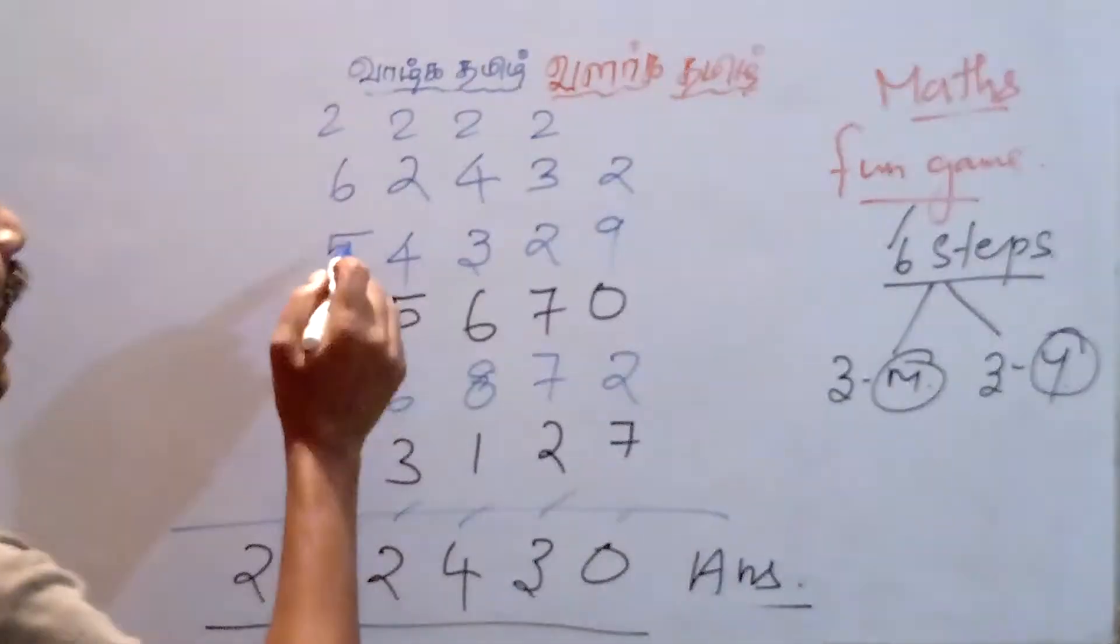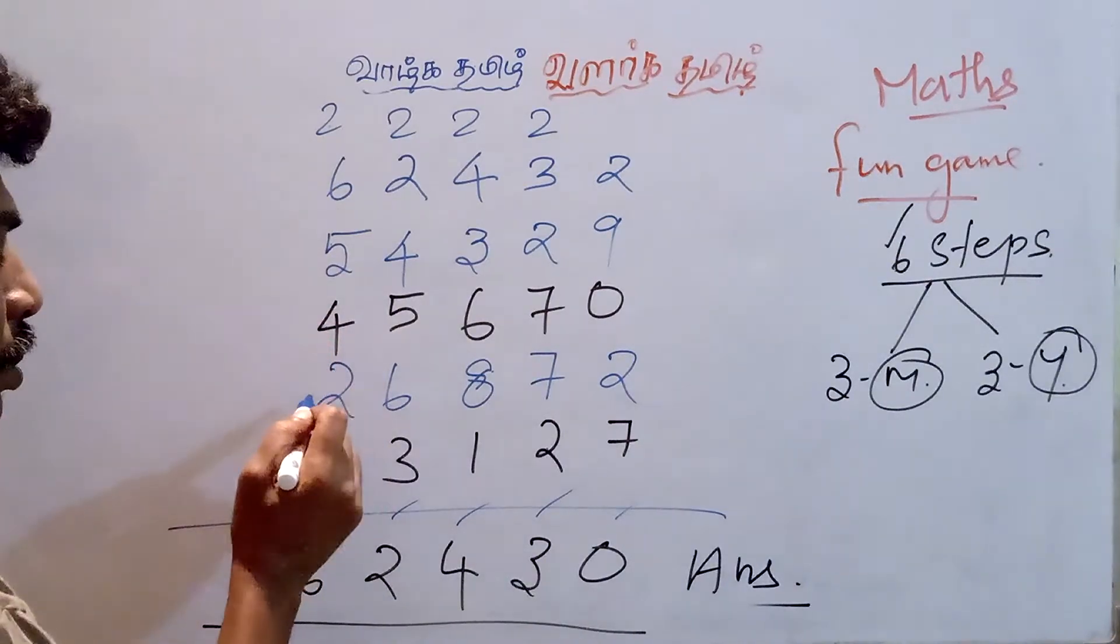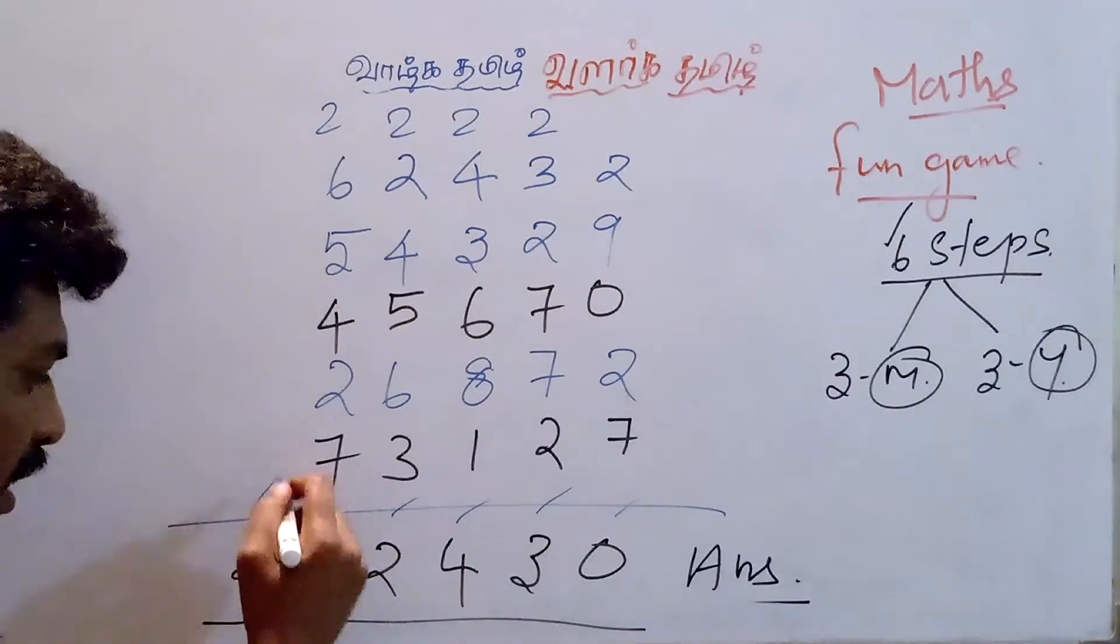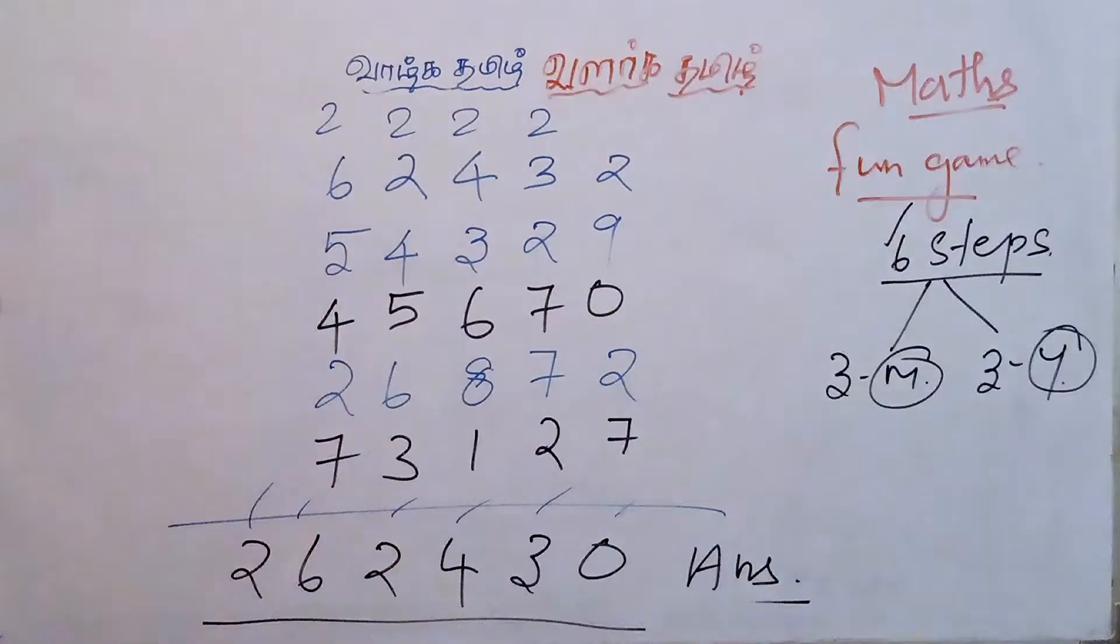2 plus 6 is 8, plus 5 is 13, plus 4 is 17, plus 2 is 19, plus 7 is 26. So, easy steps.